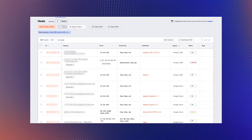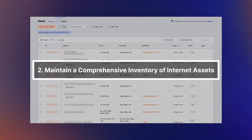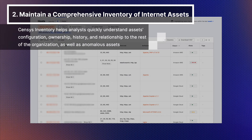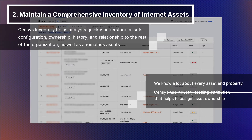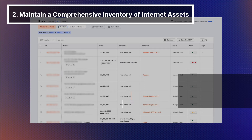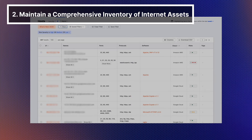We know a lot about every asset and property with our industry-leading attribution, which surfaces details including relationships to your organization, historical details, configuration, and risks. For example, focusing on the host details page, you find a wealth of information about a host including recent activity, the trail which explains how this host was discovered, its geographic location, associated fully qualified domain names, and ASN.